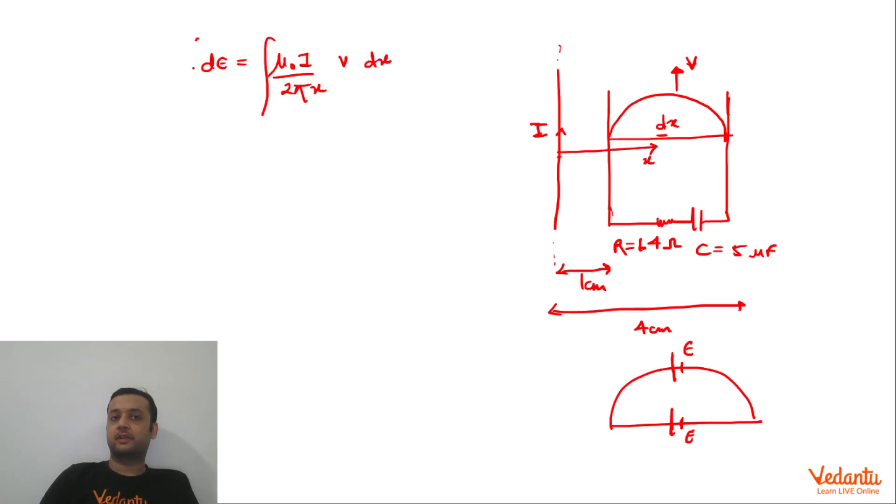So if you integrate this, EMF induced will become mu0 I upon 2 pi V dx by x will become ln x and x will vary from 1 centimeter to 4 centimeters. So this will become mu0 I V upon 2 pi ln of 4. ln can be written as 2 ln 2. So that 2 and this 2 will be gone and this will become ln 2. This is the induced EMF.